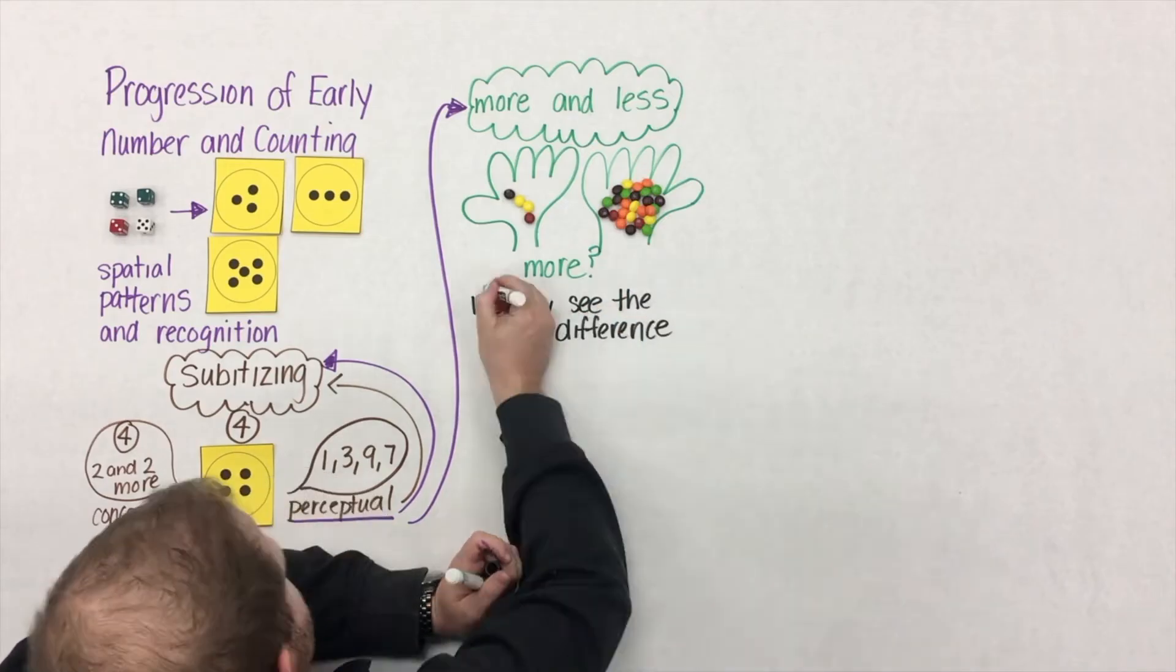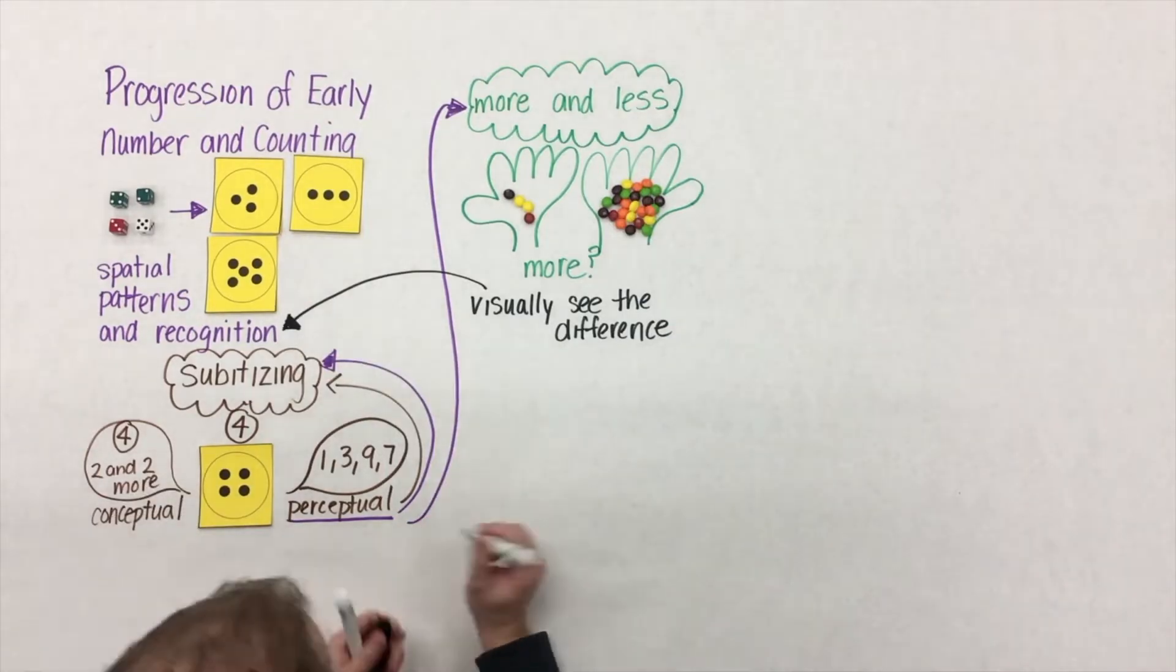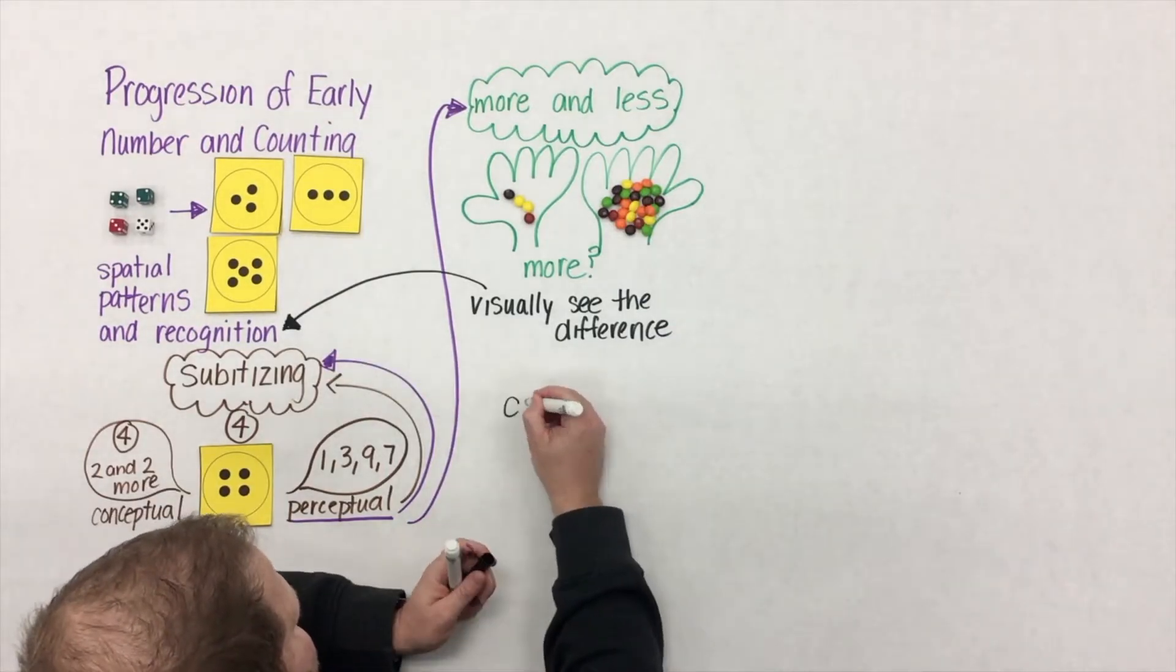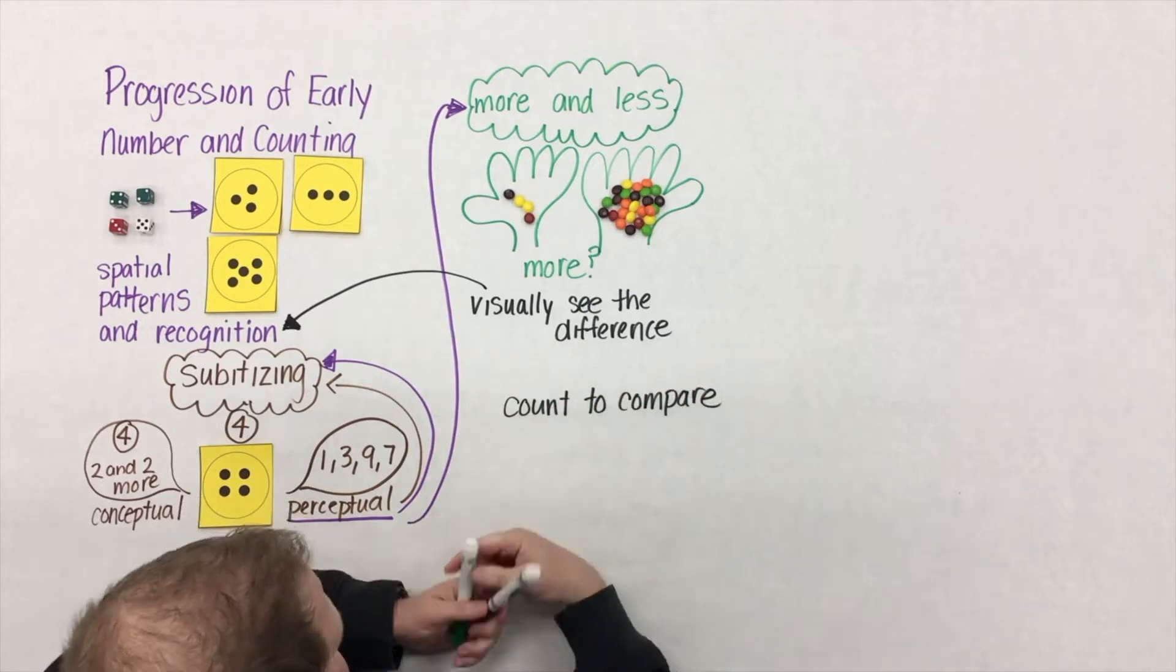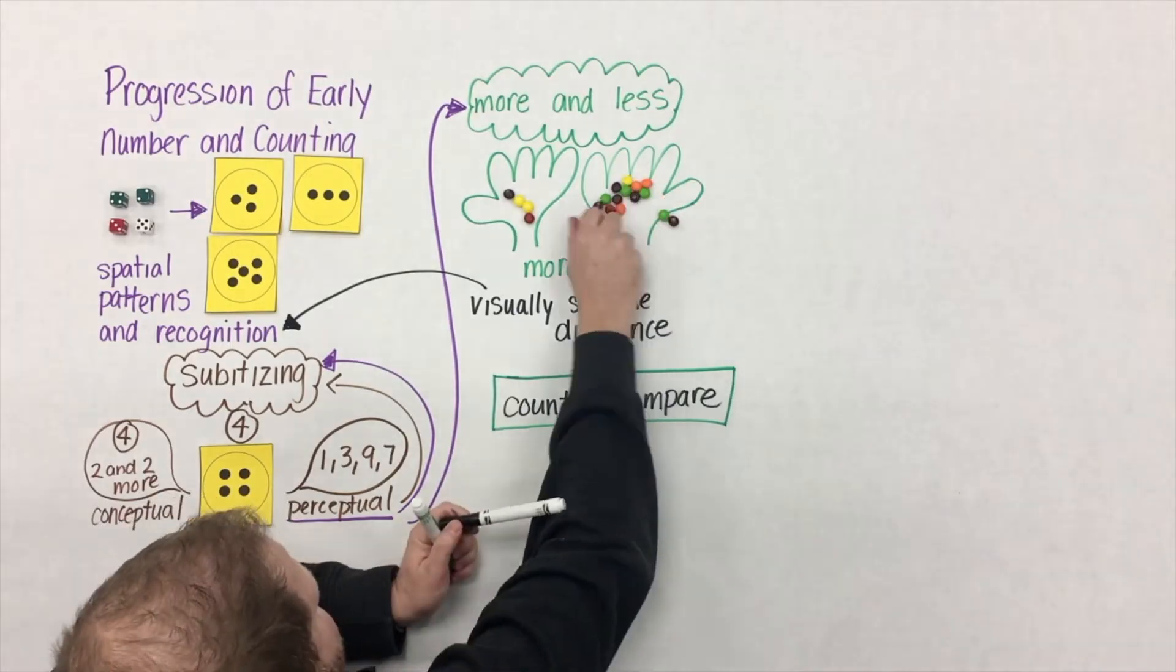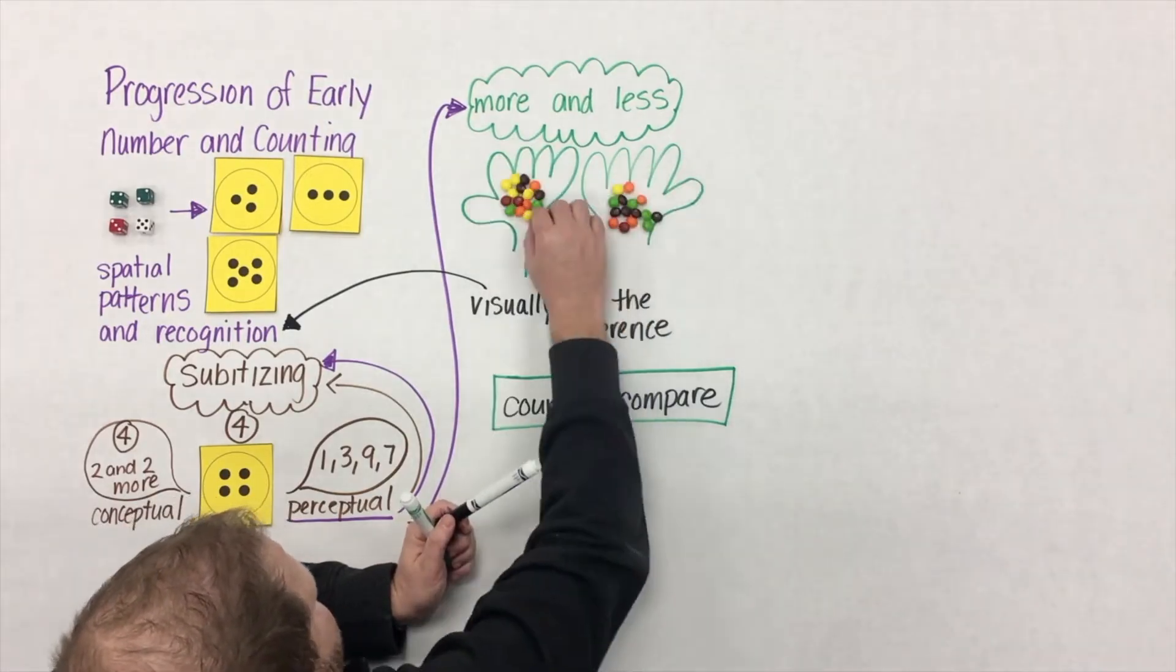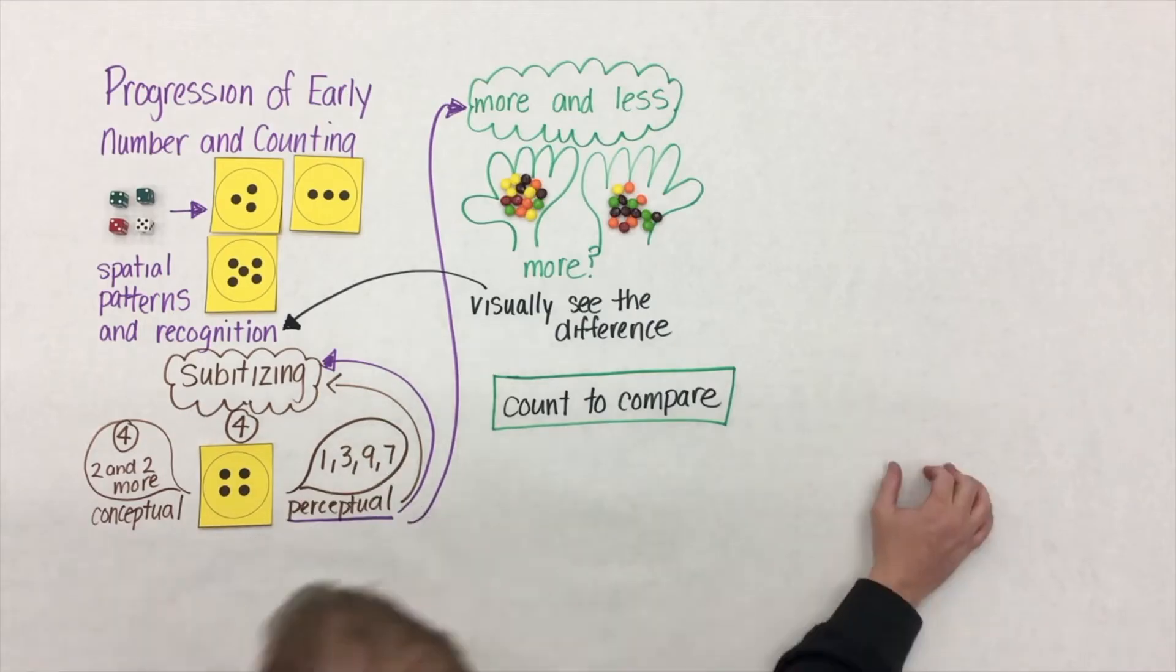They can't tell you exactly how many more, but that visual representation of more ties back to what they're doing with subitizing. The students don't need to count to compare the quantities. If we were to take some candies from the right hand, put them in the left hand to where they're equal or almost the same, now we have a need to count.